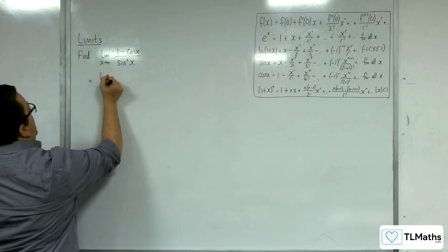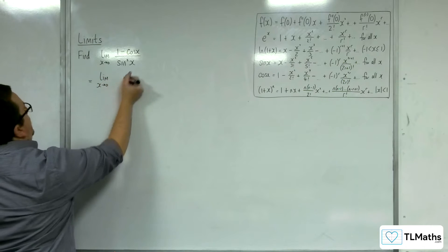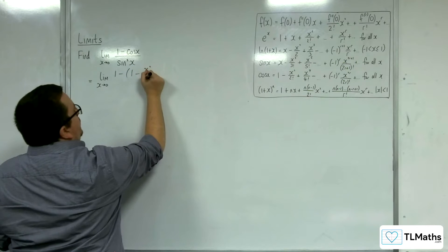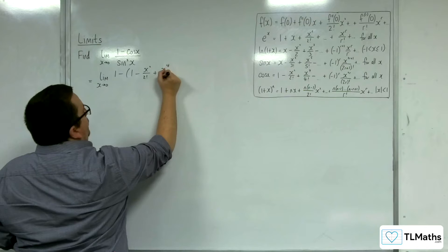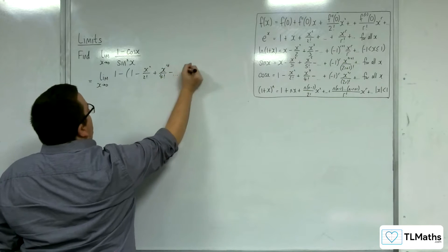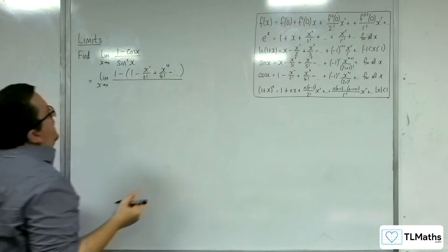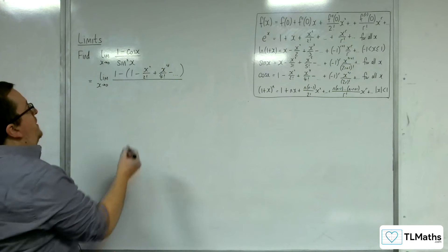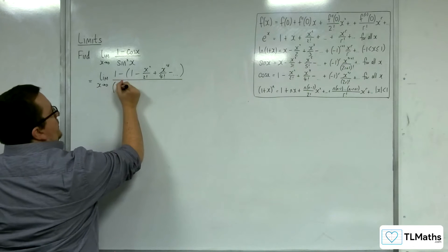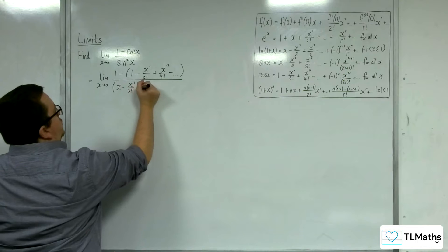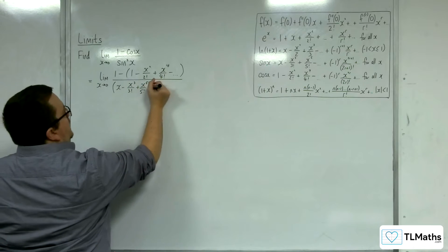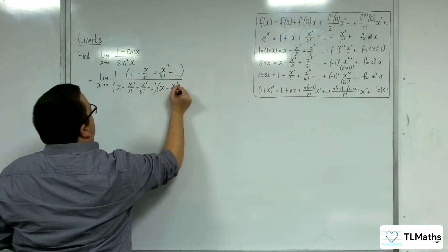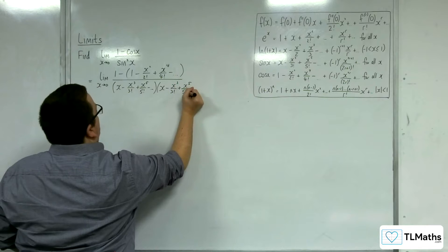We have the limit as x tends to 0 of 1 minus cosine x, where cosine x is 1 minus x² over 2! plus x⁴ over 4! minus etc. In the denominator we have sine squared x, which is sine x times sine x: (x minus x³ over 3! plus x⁵ over 5! minus etc.) times (x minus x³ over 3! plus x⁵ over 5! etc.)